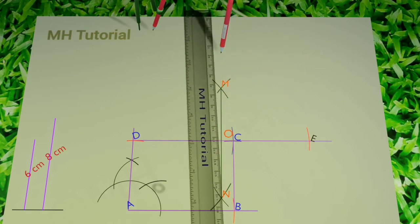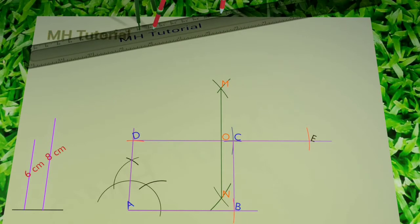This is how we find the midpoint O of the segment DE. A semicircle of radius OD is drawn taking point O as its center.